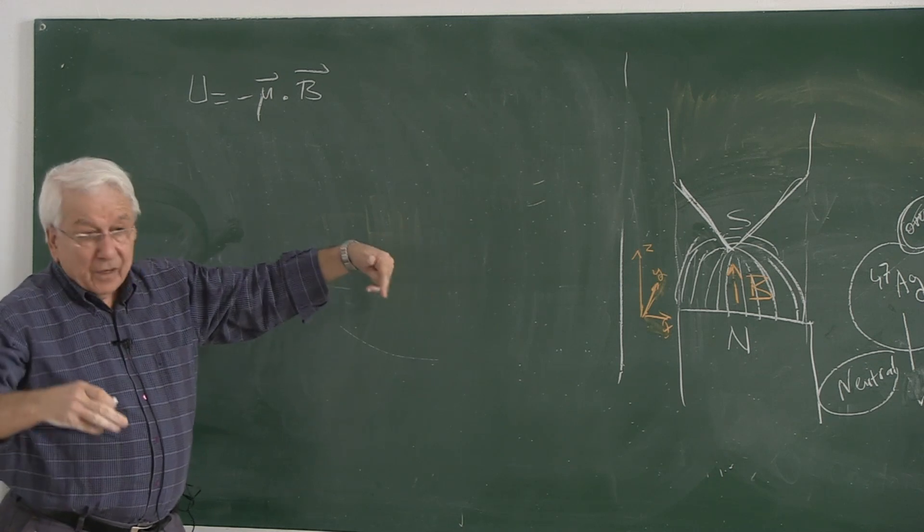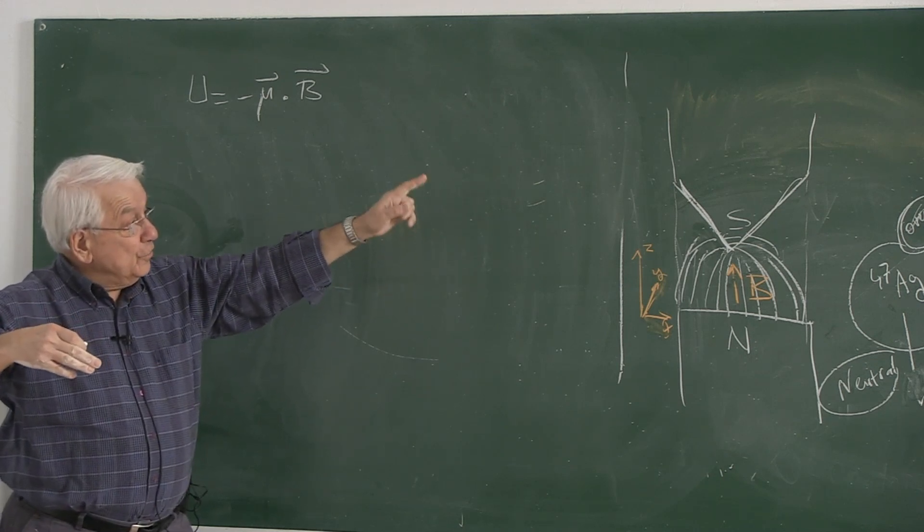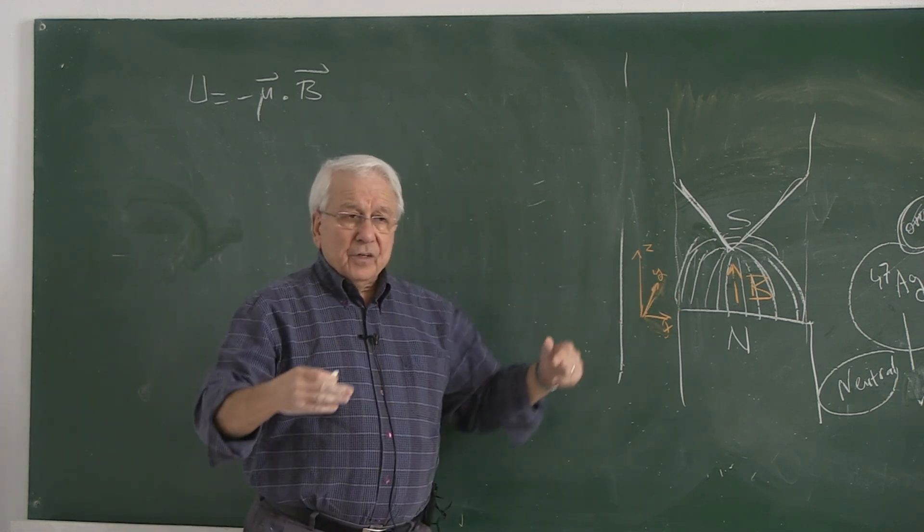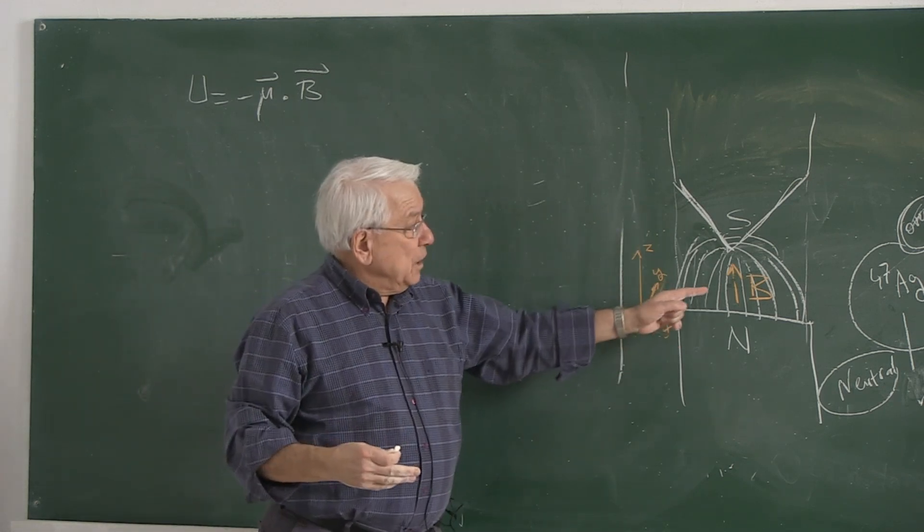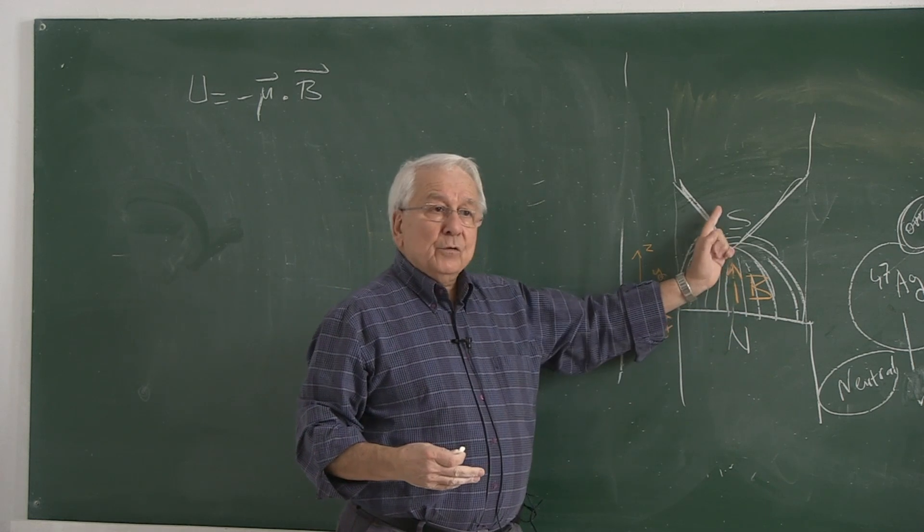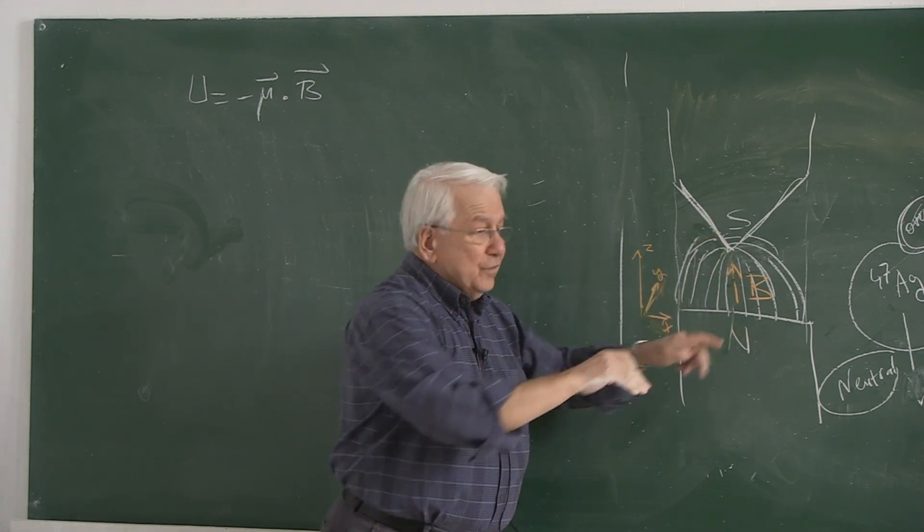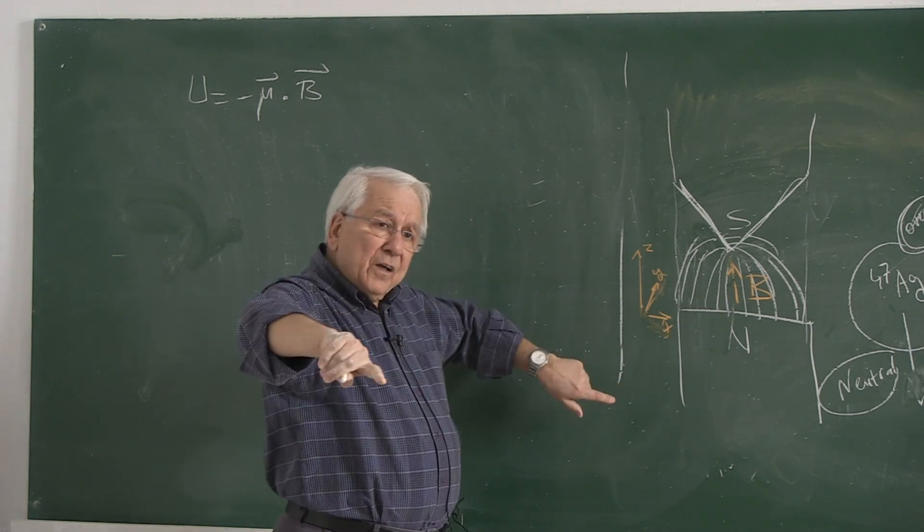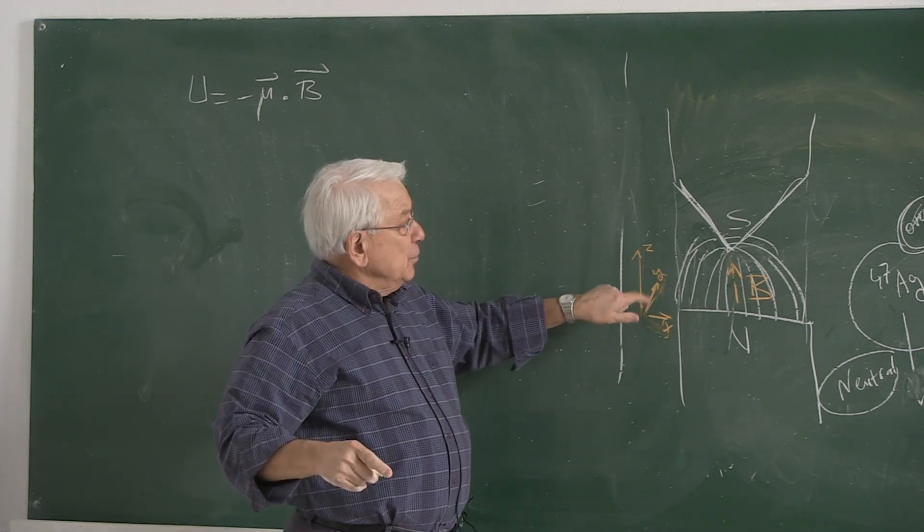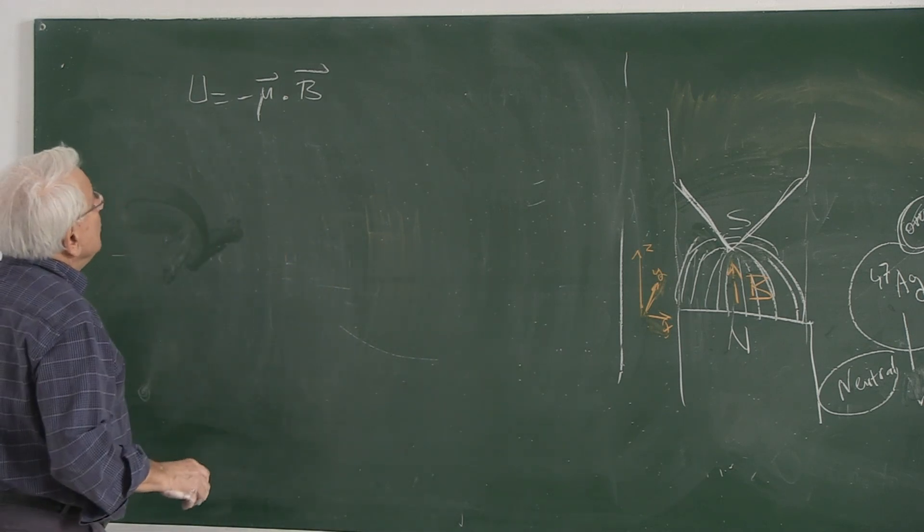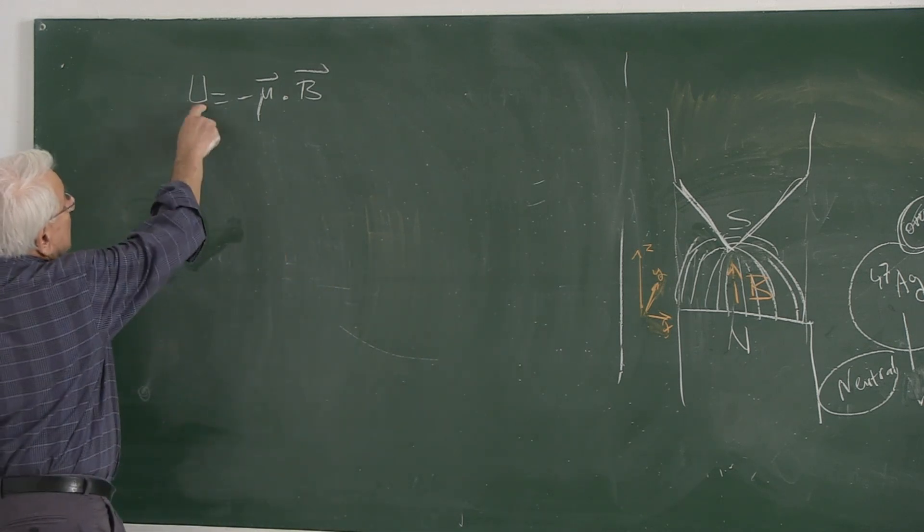Mu is the magnetic moment. B is the field. Because of this special topology of the geometry of the magnets, there is a space dependence. B is not homogeneous along the B. It is getting more dense. Therefore, it depends on the z. It depends on the x's and y's. And that is to be taken into account in the computations. This is the energy.